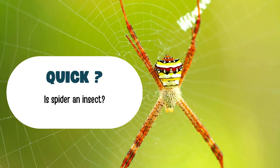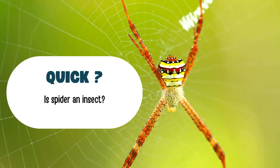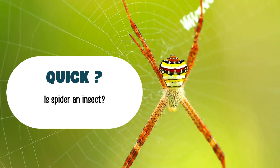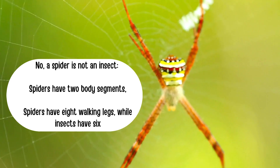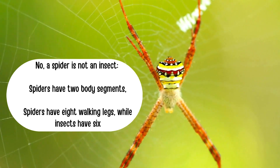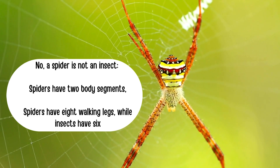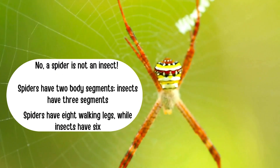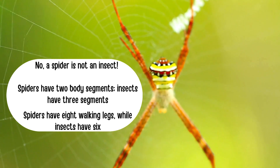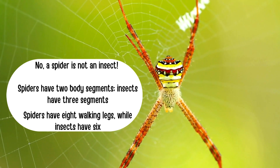Look at this beautiful red spider. Is this an insect? No, a spider is not an insect. Spiders have two body segments instead of three, and they have eight walking legs while insects have six walking legs. So the spider is not an insect.